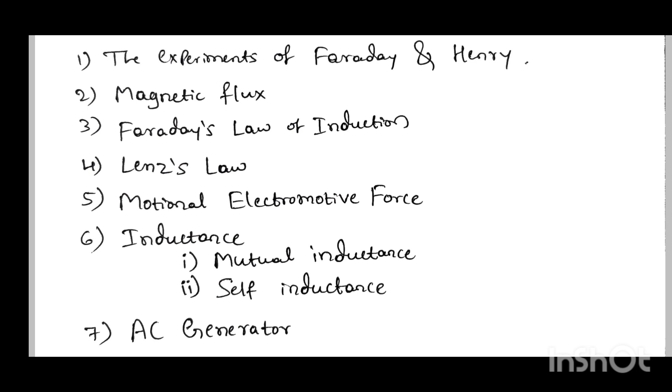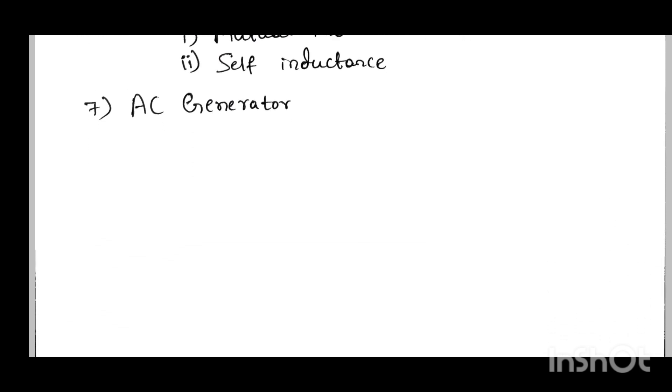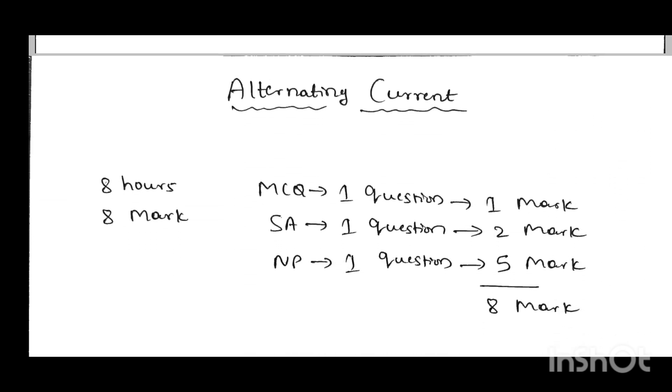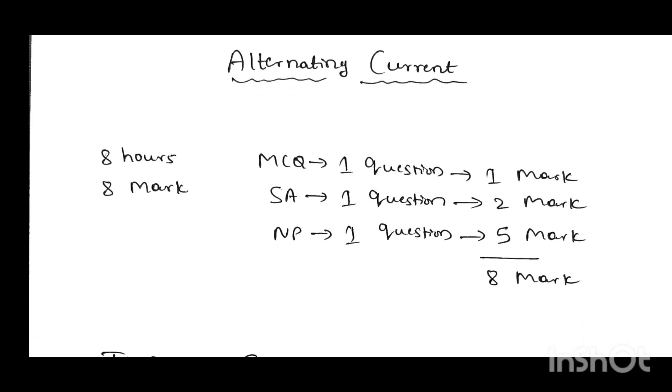Next, I'm moving to another chapter: Alternating Current. Eight hours, eight marks. One MCQ question, one AC type question carrying 2 marks, and one numerical problem carrying 5 marks, totally 8 marks. One thing to remember: in this chapter, you will definitely get one 5-mark problem-type question.